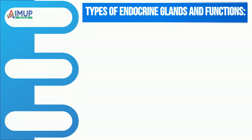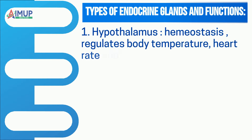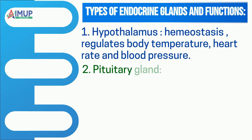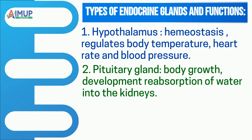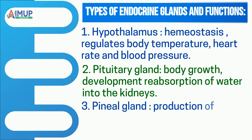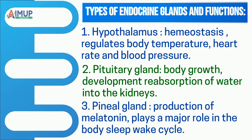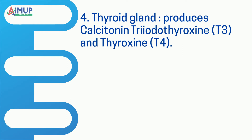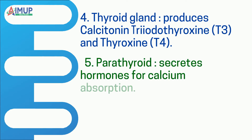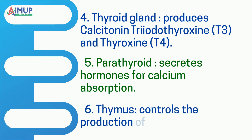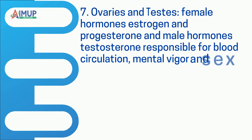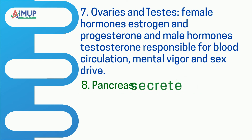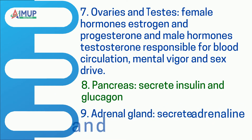Types of endocrine glands and functions: The hypothalamus maintains homeostasis by regulating body temperature, heart rate, and blood pressure. The pituitary gland governs body growth, development, and reabsorption of water into the kidneys. The pineal gland produces melatonin and plays a major role in the sleep-wake cycle. The thyroid gland produces calcitonin, triiodothyronine (T3), and thyroxine (T4). The parathyroid secretes hormones for calcium absorption. The thymus controls the production of T-cells. Ovaries and testes secrete estrogen, progesterone, and testosterone, responsible for blood circulation, mental vigor, and sex drive. The pancreas secretes insulin and glucagon. The adrenal gland secretes adrenaline and cortisol under stress conditions.